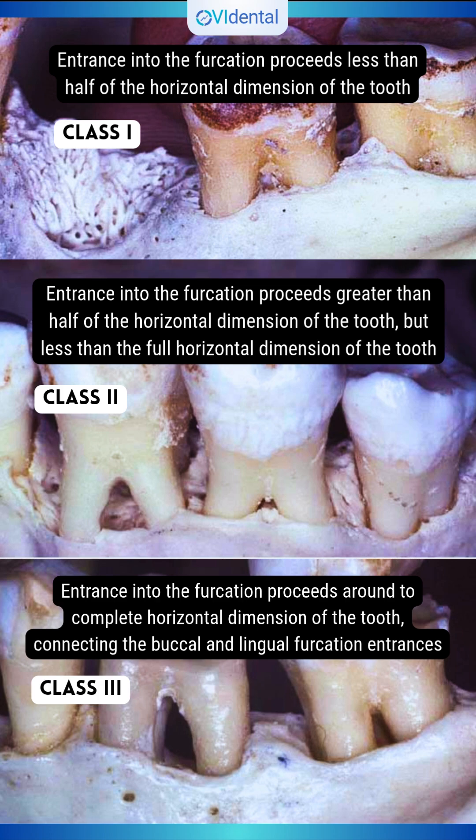Class 2: Entrance into the furcation proceeds greater than half of the horizontal dimension of the tooth, but less than the full horizontal dimension of the tooth. Figure 2.